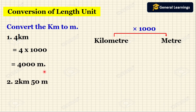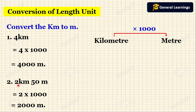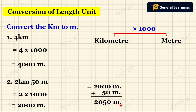Now we will see another example. Here they have given 2 kilometers 50 meters. In this question they have given both kilometers and meters, so first we need to convert the kilometers to meters by multiplying by 1000. So 2 into 1000 we get 2000 meters. Then we add the 50 meters given in the question. So we get 2050 meters. So while converting 2 kilometers 50 meters we get 2050 meters.